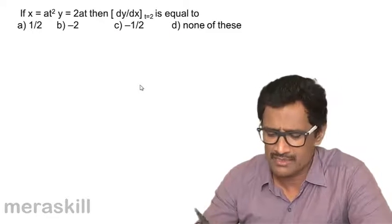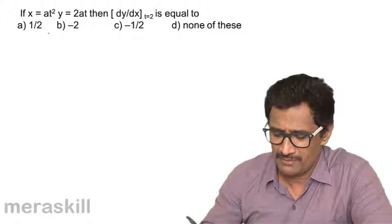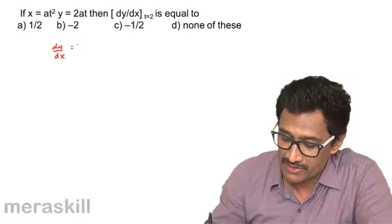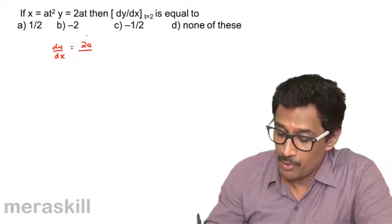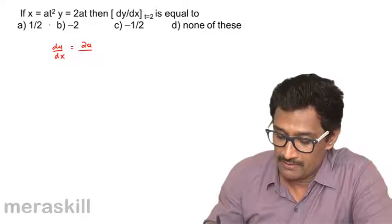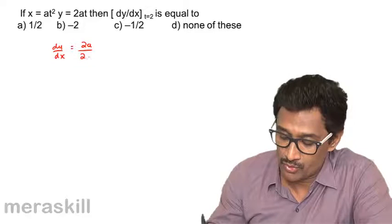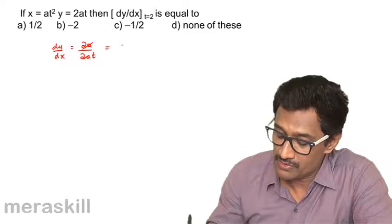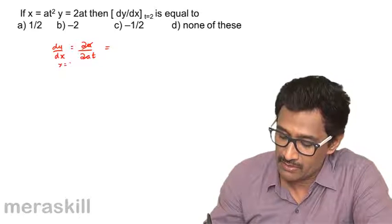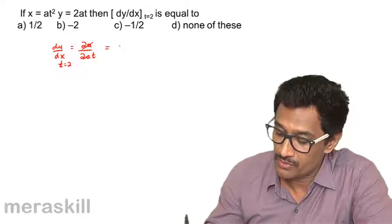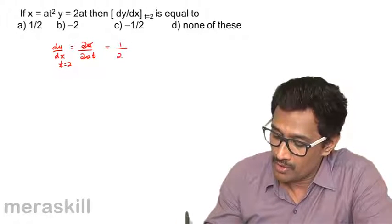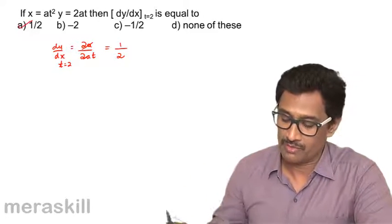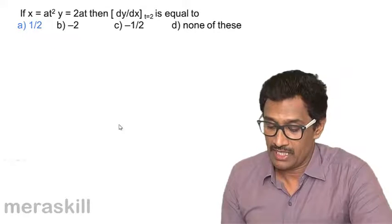Similarly, for x = at², dy/dx = dy/dt / dx/dt = 2a / 2at, which cancels to 1/t. At t = 2 this gives 1/2, so the answer is 1/2, option (a).